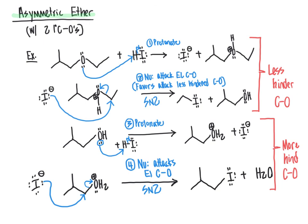With that, we'll continue to the next video, which will look at ether cleavage reactions using a halo acid focusing on situations where an SN1 reaction mechanism applies — that is, situations where the carbon bonded to oxygen is sterically hindered, rather than the primary carbon situations we've been examining here where the carbon bonded to oxygen is not particularly sterically hindered.